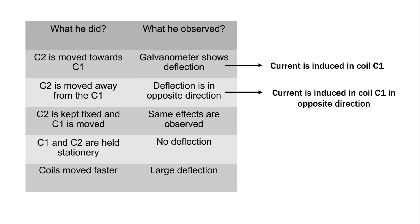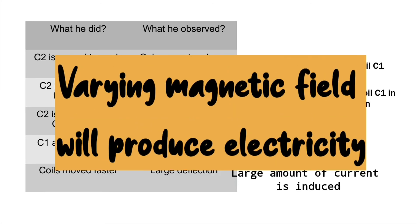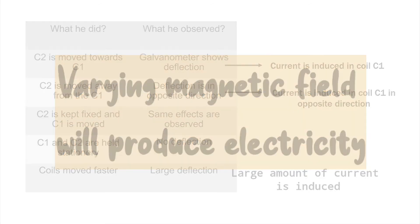At the fifth time, he moved the coils very fast towards or away from each other and observed a larger deflection in the galvanometer, meaning a larger amount of current is induced. From this he also concluded that a varying magnetic field will produce electricity.